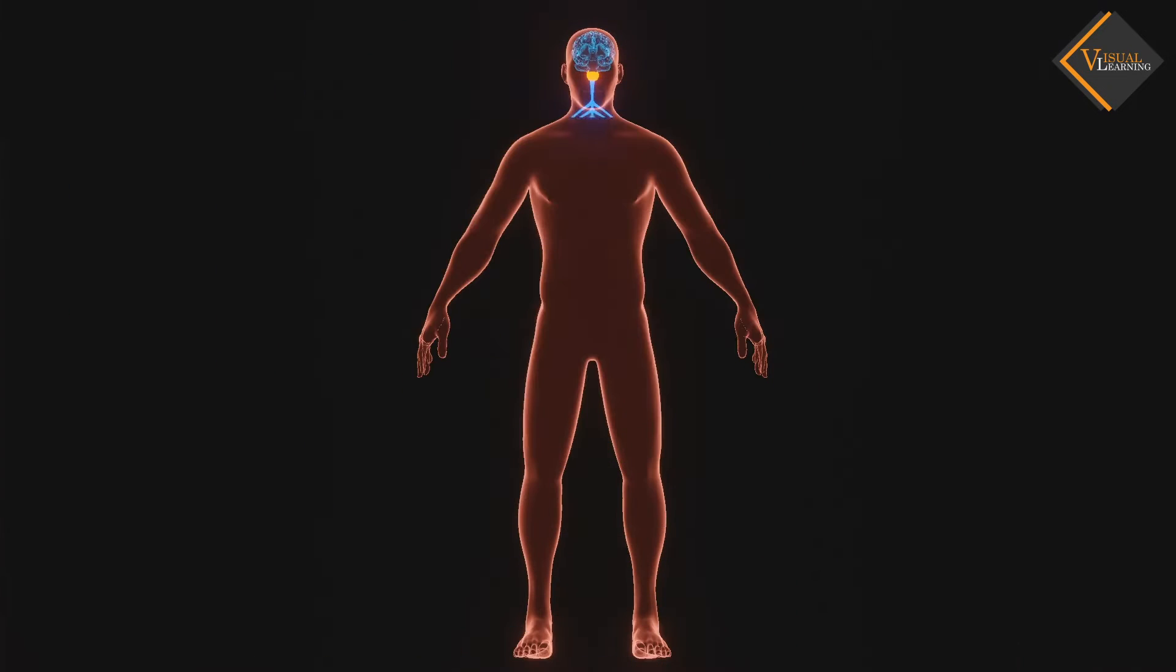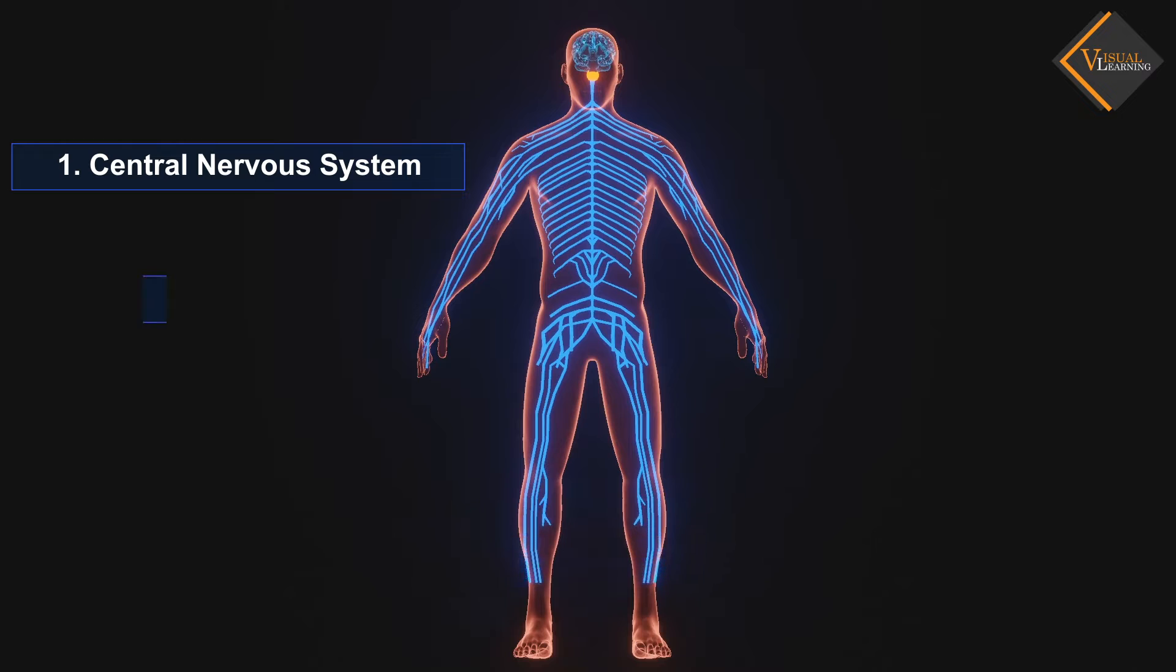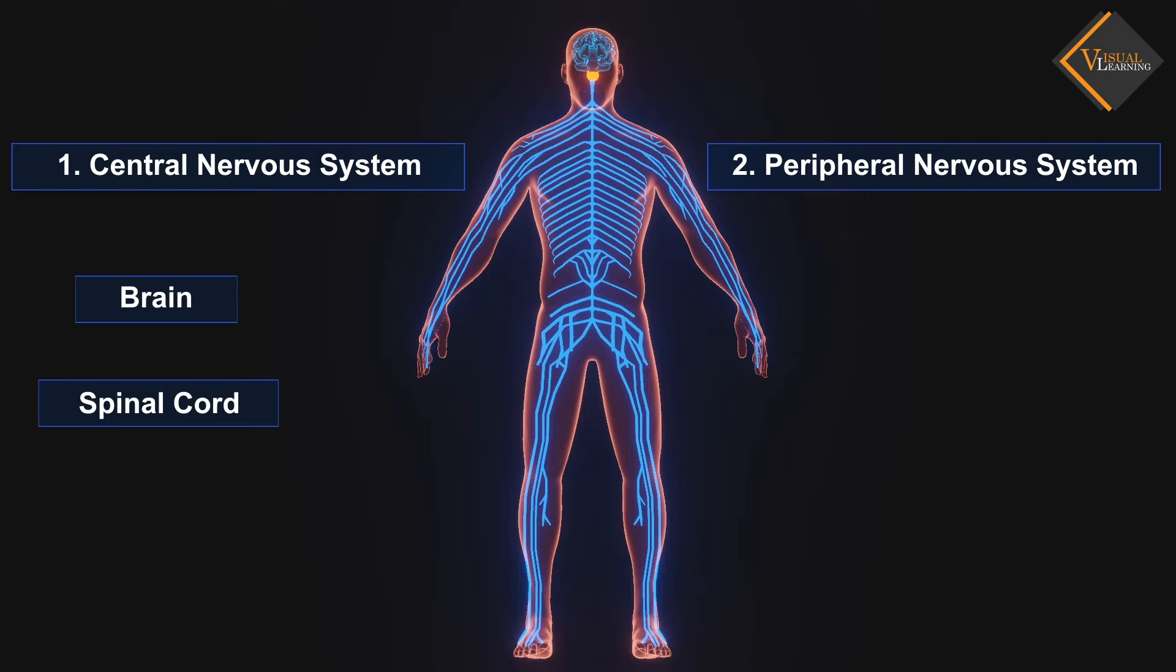The human nervous system consists of two parts: the central nervous system, which consists of the brain and spinal cord, and the peripheral nervous system, which includes all the nerves of the body.